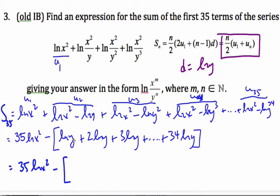Well, n I have—I'm starting here at u2. I have 35 terms in total. I'm not counting the first one, so I know I have 34 terms. So this is 34 over 2. My first term for this series is ln y. My last one is 34 ln y.